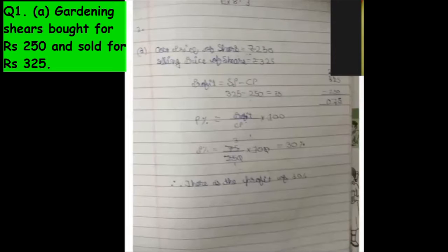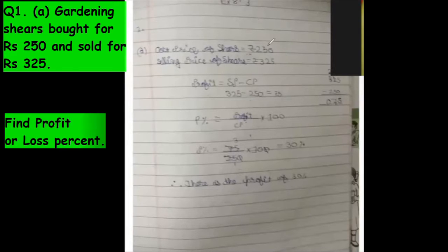So they have bought, so cost price of share is 250, and sold it at 325. It is probably, SP is greater than CP. Profit equals SP minus CP, 75. Rupees 75, okay do the correction.